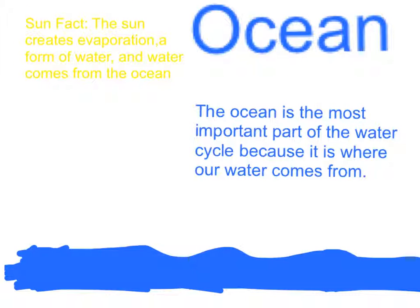Ocean. The ocean is the most important part of the water cycle because it is where our water comes from. Sun fact: the sun creates evaporation, a form of water movement, and water comes from the ocean.